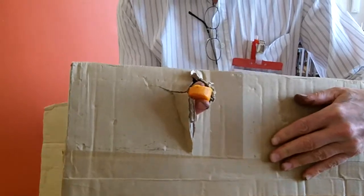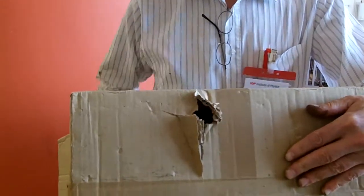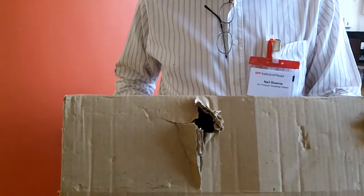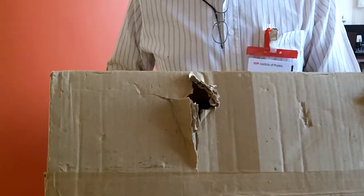This is where the carrot came through. As you can see, we didn't take any chances behind the cardboard box, triple thickness cardboard. We had, of course, a one-inch piece of wood.